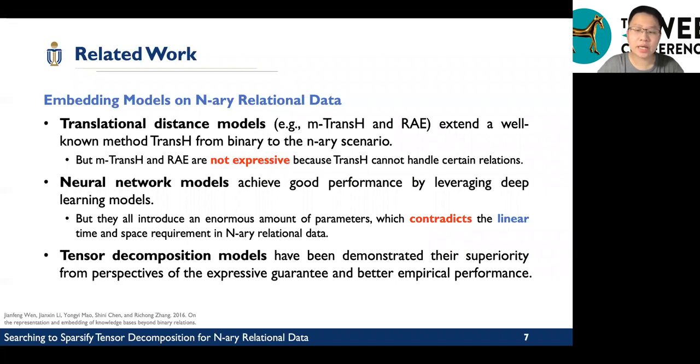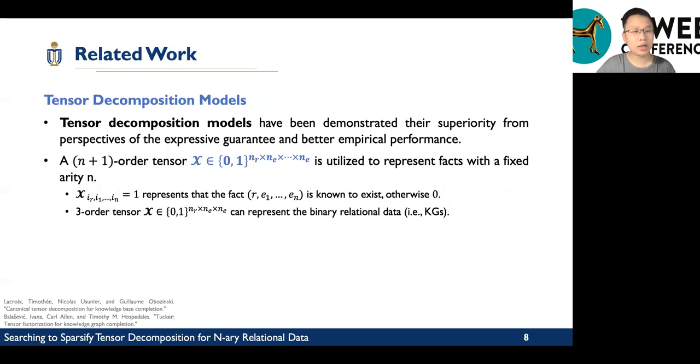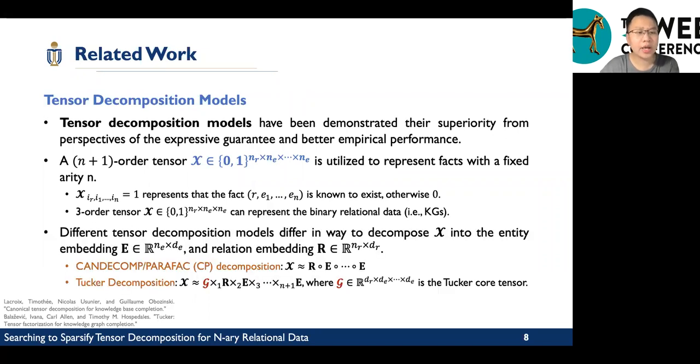And tensor decomposition models have been demonstrated similarities from expressive guarantees and better empirical performance. What is tensor decomposition models? An n plus 1 order tensor is utilized to represent facts with a fixed arity. The element in the tensor set to 1 represents that the fact is known to exist, otherwise 0. A 3-order tensor can represent the binary relation data.